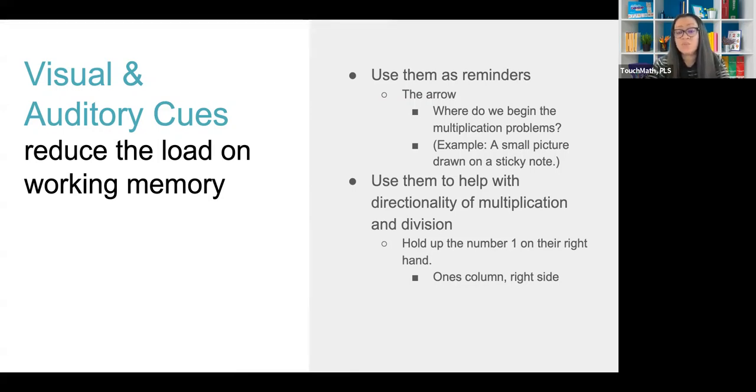We use auditory and visual cues to help with directionality of multiplication and division. These problems have to be done with a certain step, certain process. Things need to happen before other things. If they happen in the wrong direction, in the wrong order, the problem will not be solved correctly. We have the arrow that's there as the visual cue. A teacher might actually hold up one number or direct the students to hold up the number one on their right hand, which may help to remind them, one's column right side is where I would start that problem. There's lots that we can come up with as teachers when we know the type of learner that we have and the different ways that they respond to things.